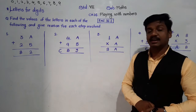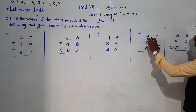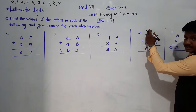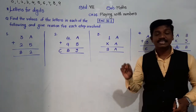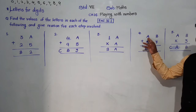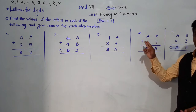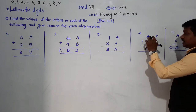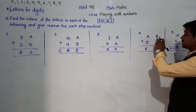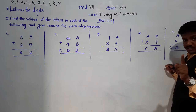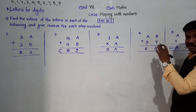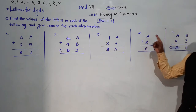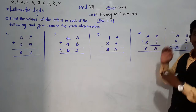The second rule is: if the first alphabet is where the number is starting, that first alphabet will not stand for 0. The first letter cannot be 0. Because if A is standing for 0 in a two-digit number AB, it would become a one-digit number. So the first letter cannot be 0.